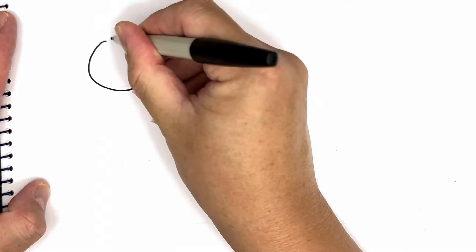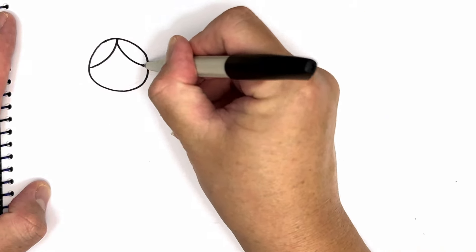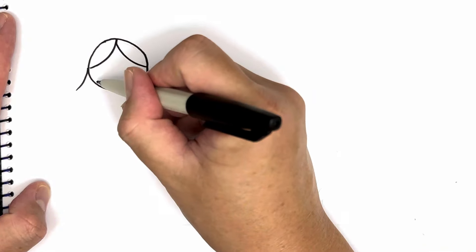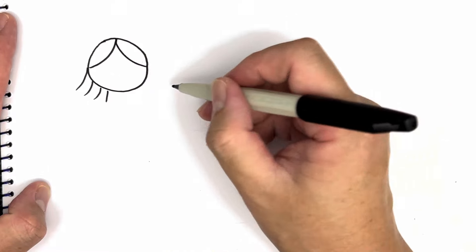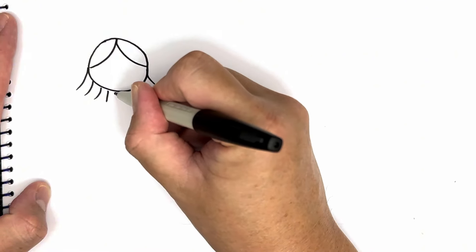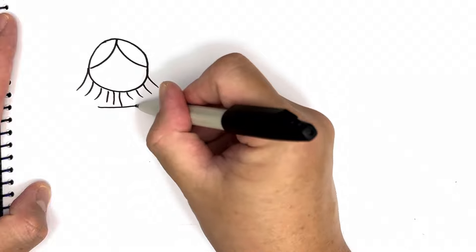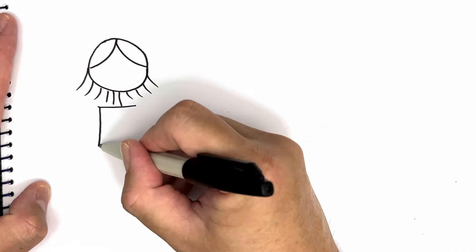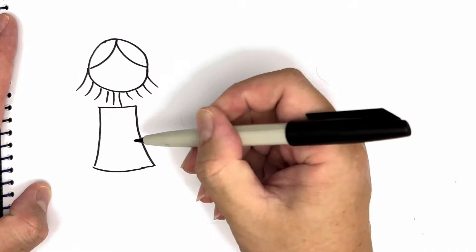Hello, guys. Today we're going to draw a picture of a family. In this family, there is a dad, a mom, a big sister, and a little brother. Who is in your family? Grab your paper and pencil and let's draw together.